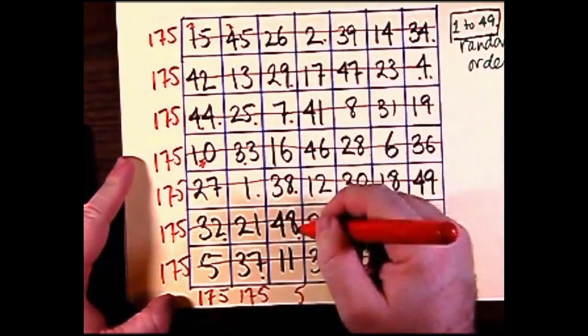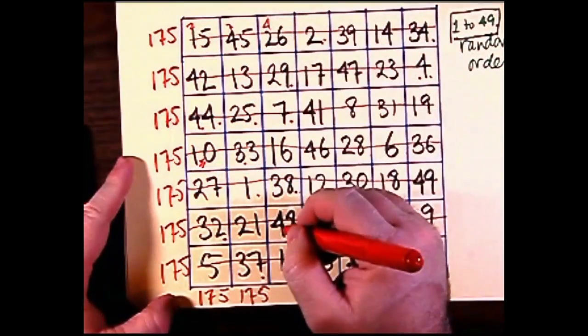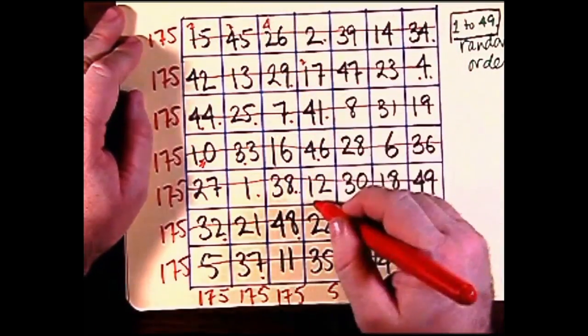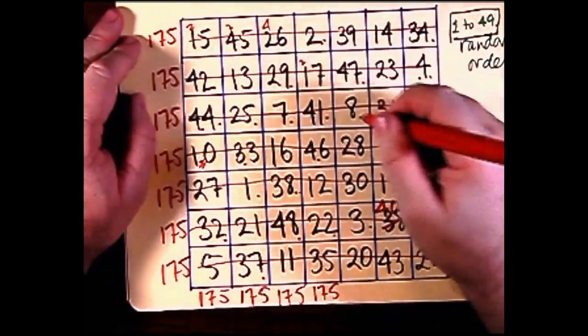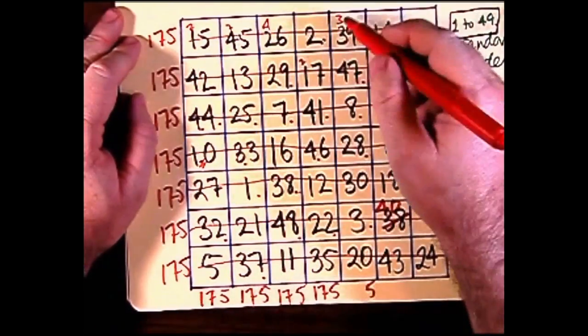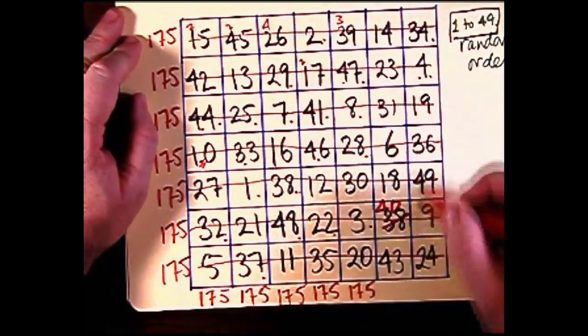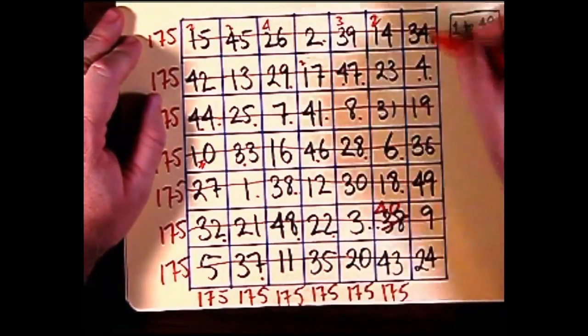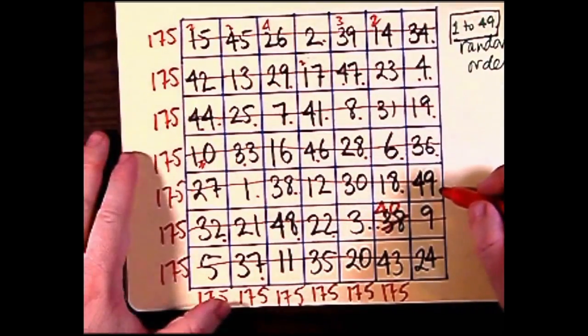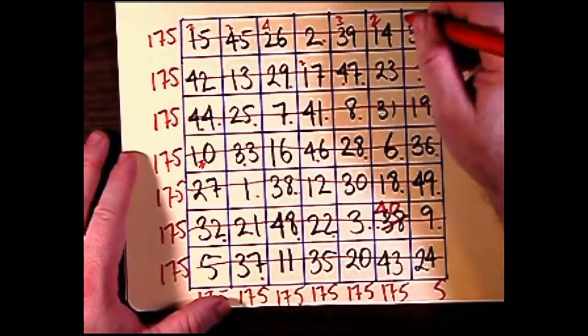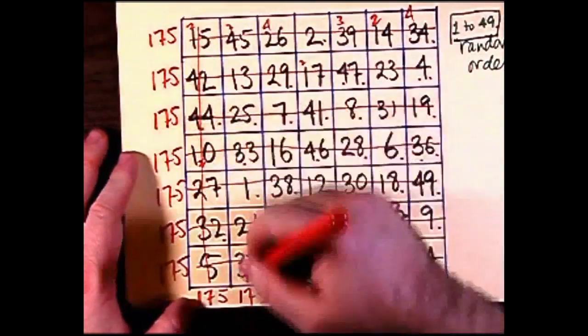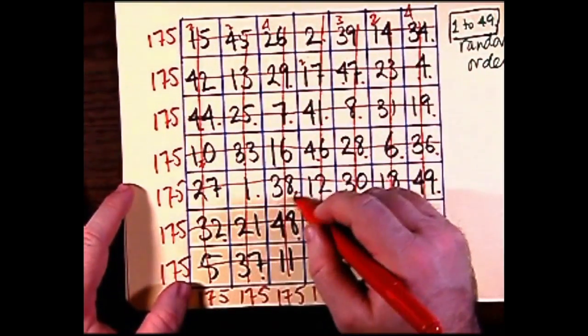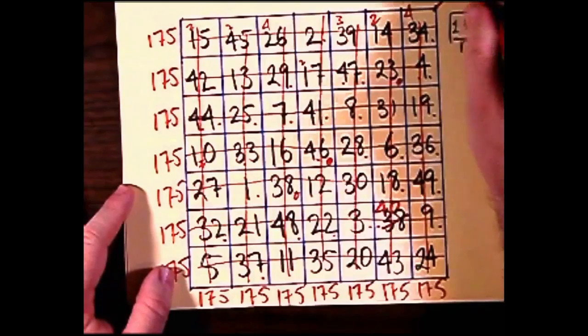As you can see there, there are no repeats in the numbers. Yet by some random arrangement of these numbers, and only certain random arrangements work, you get the number 175 in every row and in every column, but you also get it in both diagonals. Now if you saw my video on 5 by 5 magic squares, you also probably discovered that the 5 by 5 magic squares have hypermagic properties.